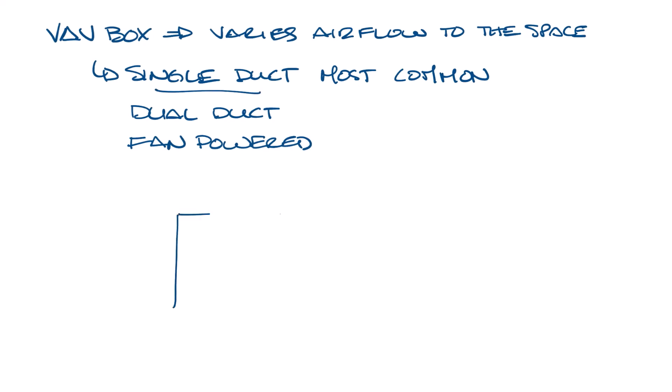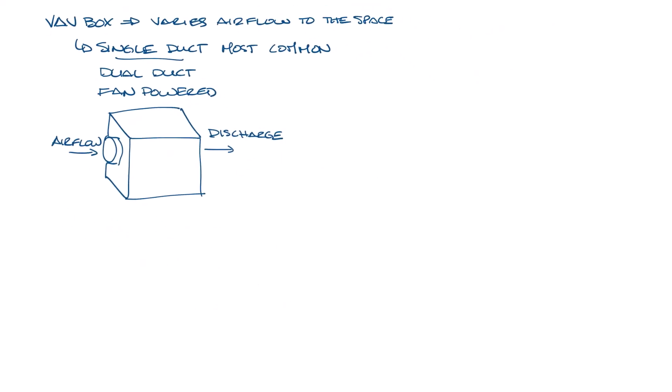The casing of a single duct box consists of an inlet, which is typically round, mounted in a square or rectangular casing. The supply air goes in the inlet and out the discharge to the diffusers or grills in the room. So let me make a little room and let's talk about how it all works together.